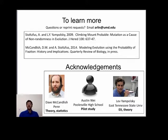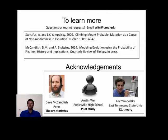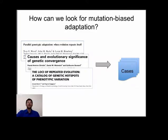I'd like to acknowledge David McCandlish, my collaborator and co-author on this project; Austin Way, the high school student who did a pilot study; and Lev Mpulski, a former postdoc whose work I'll mention below. Mutation-biased adaptation is possible in theory, but how do we test its real importance?